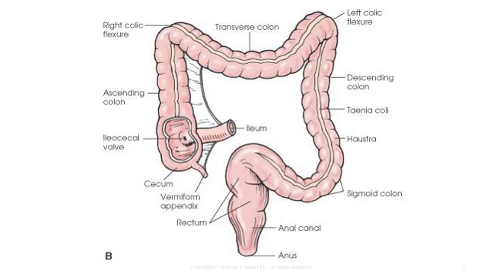The left colic flexure, also known as the splenic flexure, forms a sharp angle at the junction of the transverse and descending colon. Finally, the sigmoid portion forms an S-shaped loop and ends at the rectum at the level of the third sacral segment.